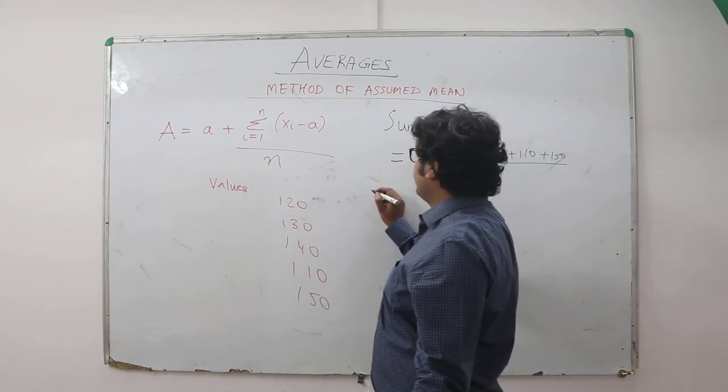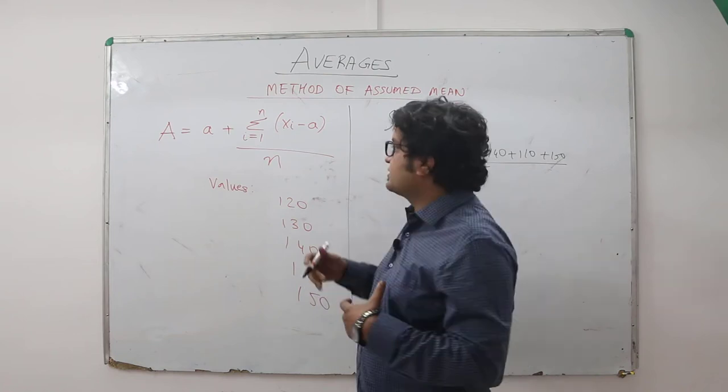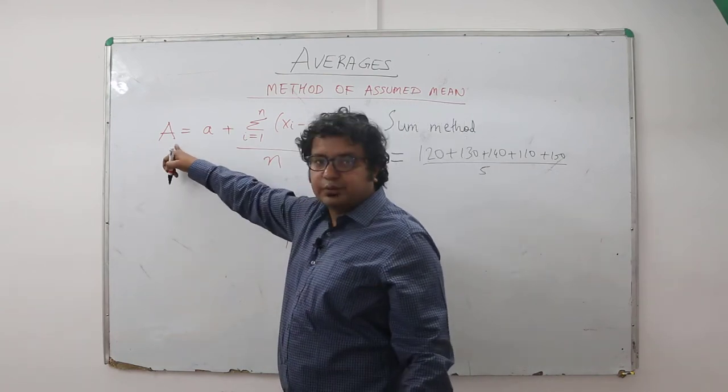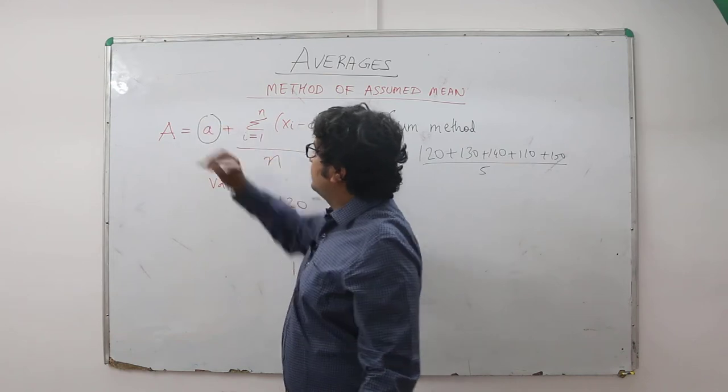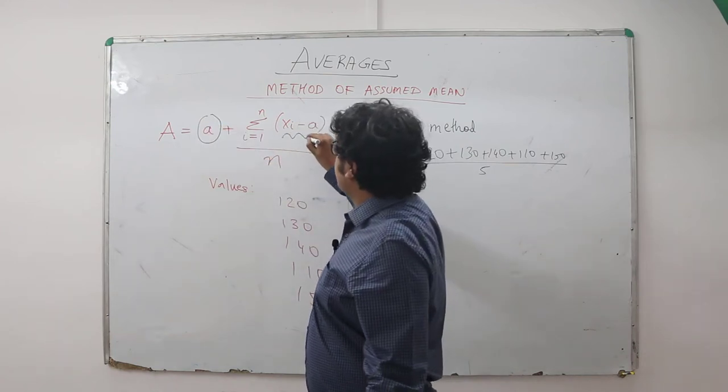Now coming to the deviation method. Why am I calling this assumed mean a deviation method? Look at the formula. Average is equal to assumed mean plus average of deviation from the assumed mean.